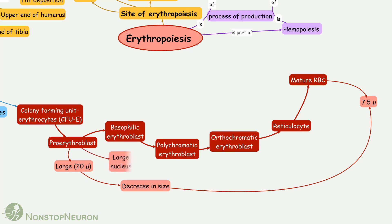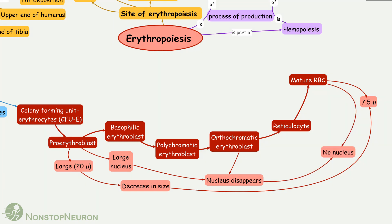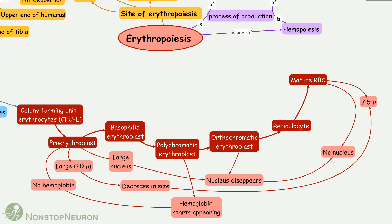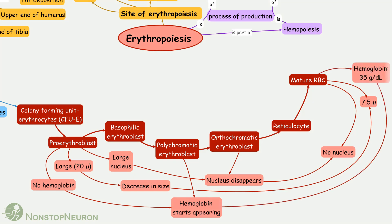Second, the proerythroblast has a large nucleus. However, it gets smaller and disappears at the orthochromatic erythroblast stage, just before entering the reticulocyte stage. So mature RBCs do not have a nucleus. Lastly, the proerythroblast has no hemoglobin. Hemoglobin starts appearing in the polychromatic erythroblast, and mature RBCs have hemoglobin as high as 35 grams per deciliter.